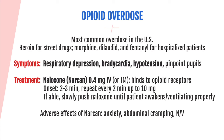Treatment is Narcan. In the hospital, we give 0.4 mg IV; it binds to opioid receptors and reverses the opioid. Onset is 2-3 minutes, and you can repeat 0.4 mg doses every 2 minutes up to about 10 mg. Be careful reversing opioids in hospitalized patients receiving them for pain control — slowly push naloxone just enough so they're ventilating properly without completely reversing the opioid. Adverse effects of Narcan include anxiety, abdominal cramping, and nausea/vomiting.